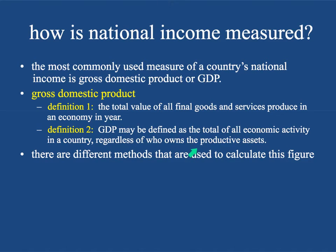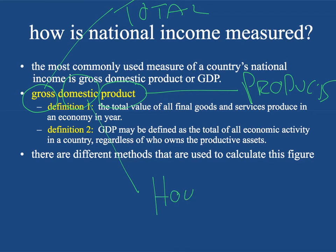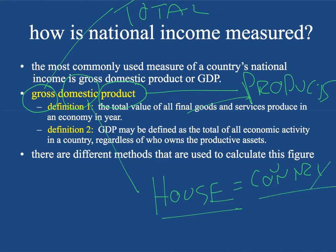There are different ways of measuring it, which is what this video is going to be about. But I want you to think about the words 'gross domestic product.' Gross just means total — the total value of the product. Domestic means in your house, meaning your country. So gross domestic product is the total value of the products made in your particular country. Every country is going to have its own gross domestic product, and it doesn't matter who owns the productive assets.